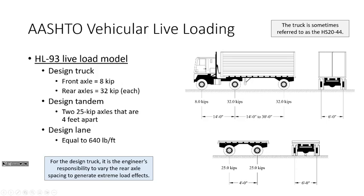A bit of terminology: this truck is sometimes called the HS20-44. The '44' stands for 1944, when the truck was initially developed. The '20' comes from the fact that the front axle weighs 8 kips — each wheel is 4 kips — and the first two wheels add up to 20 kips total (4 + 16 = 20). So we've actually been using this truck model for a long time.